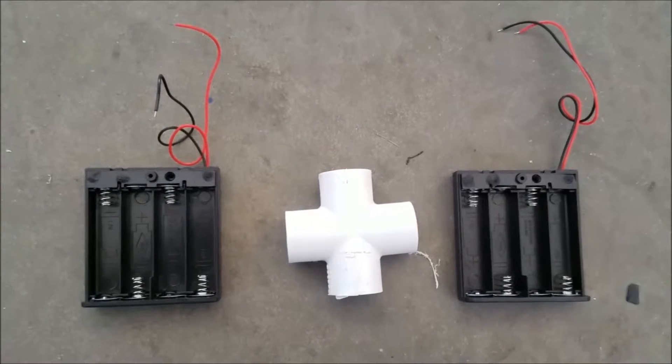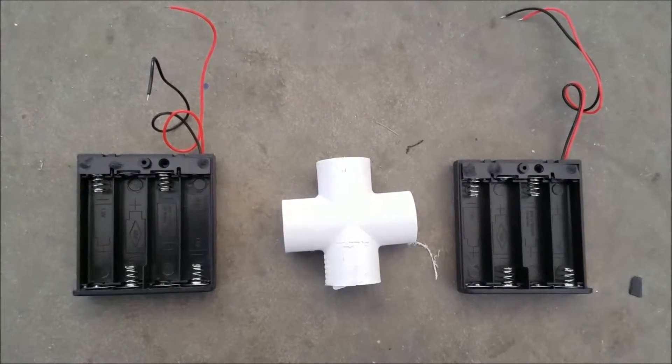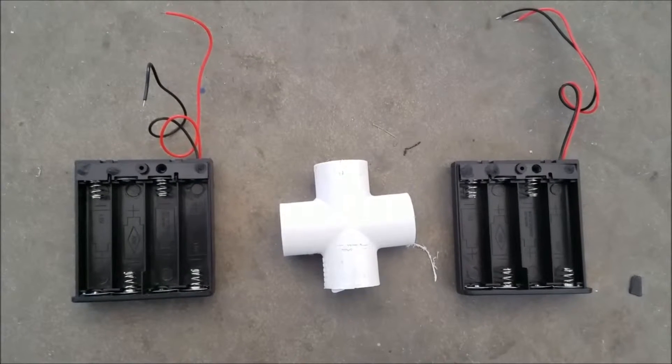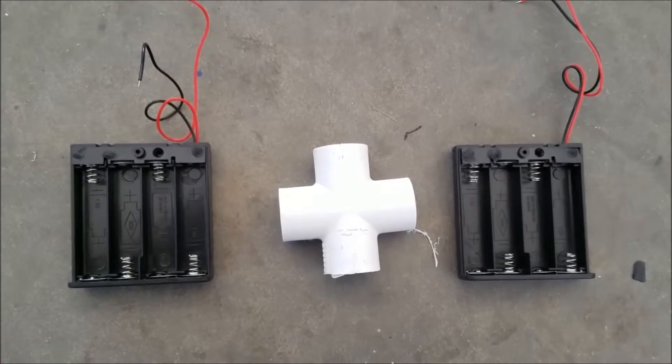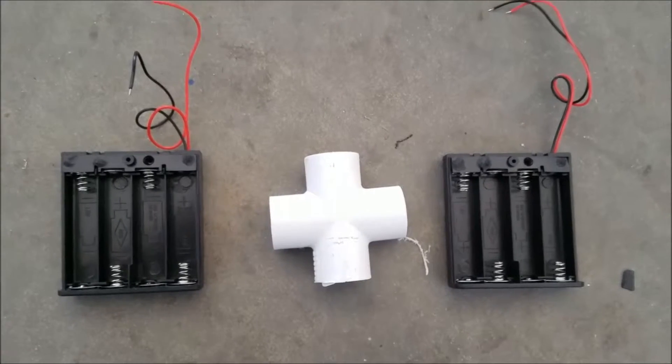First thing we're going to want to do is attach these power packs to this T-section of PVC pipe coupling. We're going to do that by cutting some holes in the packs themselves, and then drilling the holes and attaching them with the bolts.